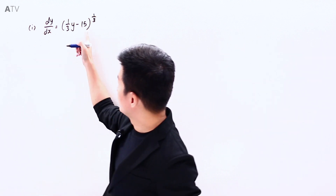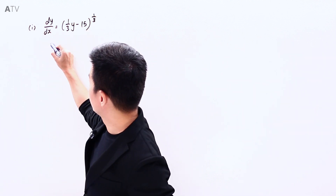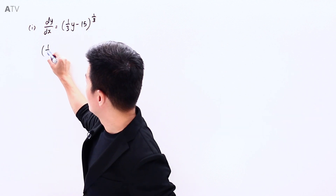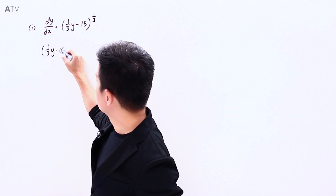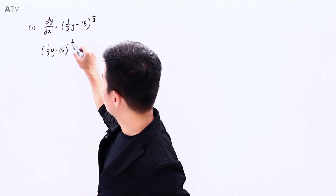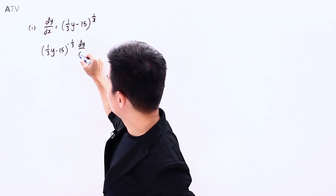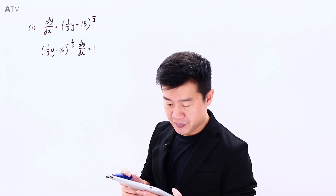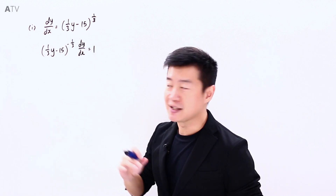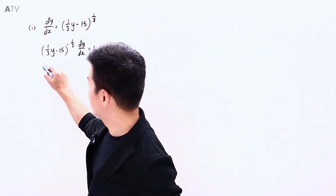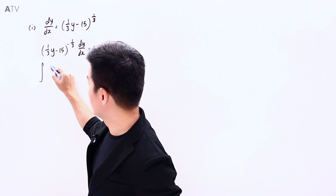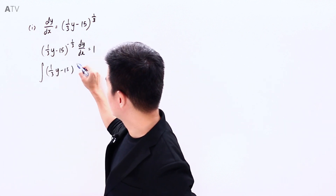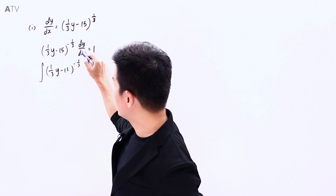Dividing over to the other side, I have 1 over 3y minus 15 to the power of negative 1/3, which I can rewrite as (1/3y − 15)^(−1/3). Then dy/dx equals 1. Integrating both the left and right hand sides with respect to x, on the left hand side we will have (1/3y − 15)^(−1/3) dy/dx.